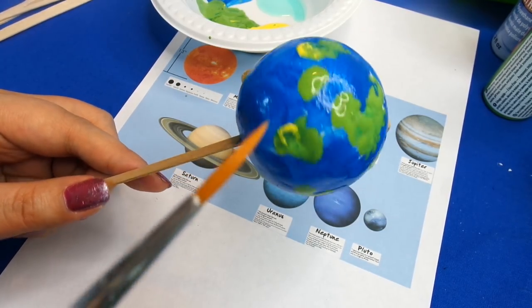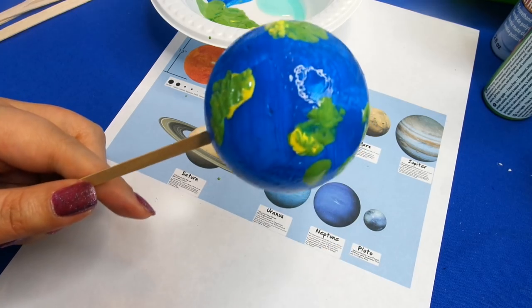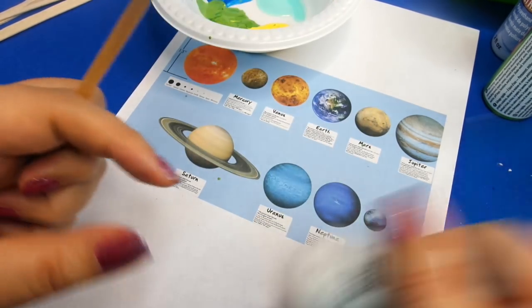And then I'm going to take a little bit of white and I'm just going to very lightly drag it over the surface so it looks like the clouds.